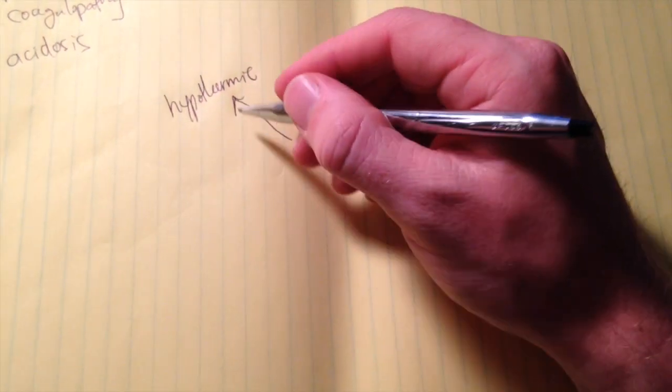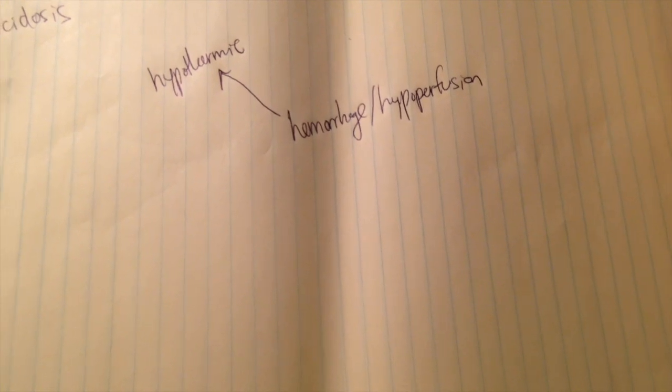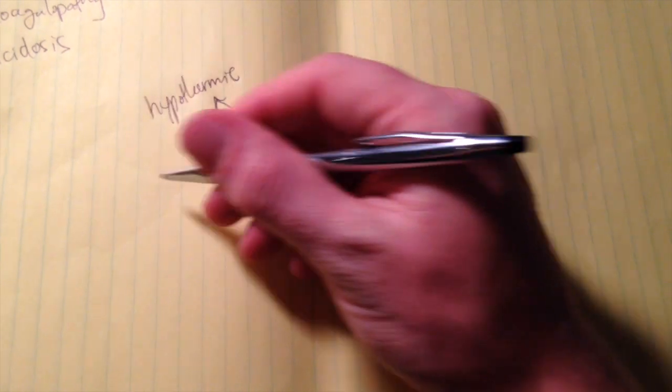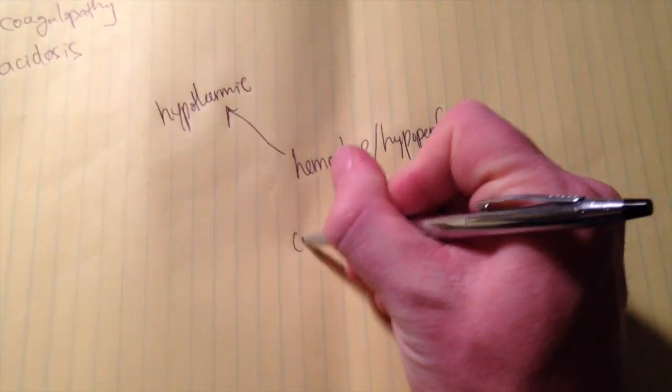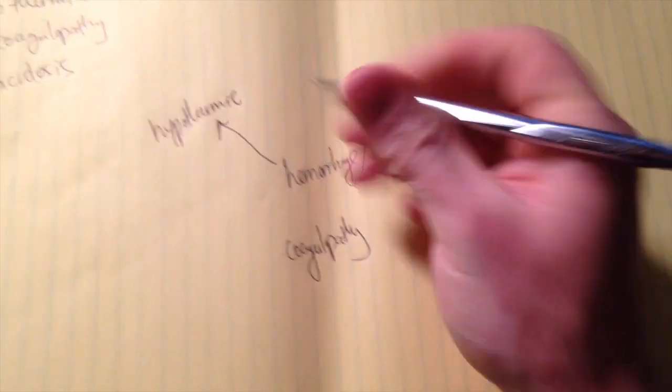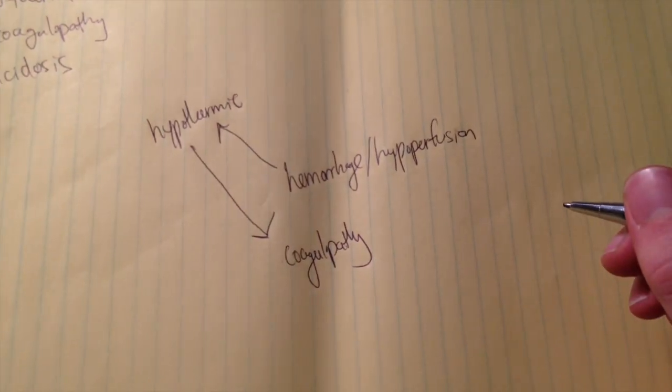We know that the coagulation system is dependent on a bunch of enzymes or clotting factors. As we know from our basic sciences, enzymatic reactions are dependent on temperature. So if the body is hypothermic, you can imagine that can result in these clotting factors not working the way they normally do, leading to a coagulopathy.